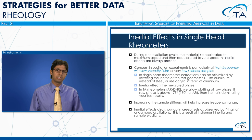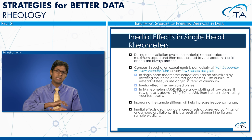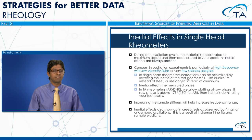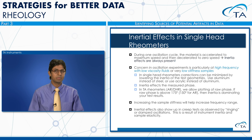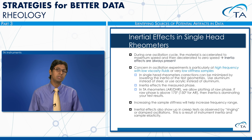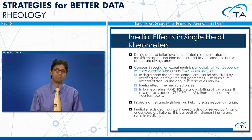In single head rheometers, inertial effects are almost always present when doing oscillation experiments, because during each oscillation cycle we accelerate the material to maximum speed and back down to zero. These effects are particularly pronounced with low viscosity materials at high frequencies or samples with very low stiffnesses. Inertial effects can be minimized by changing the geometry; aluminum is a better choice than stainless steel, and acrylic geometries are better than aluminum because they have lower mass.